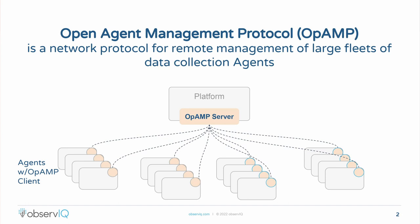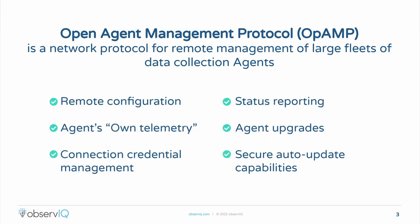So what does OpAMP include? The short answer is everything that you need to manage the lifecycle of agents. That includes definitions for remote configuration of agents, status reporting, agent own telemetry — what's going on in the internals of that agent — agent upgrades allowing packages to be deployed, and security considerations like connection credential management and secure auto-update capabilities. That was part of the focus on making sure this can be used by the largest organizations.